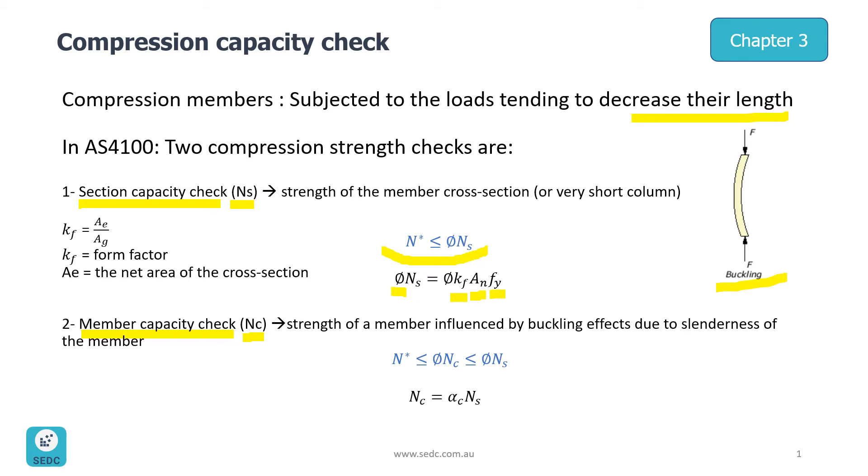The governing formula here is N* ≤ φNC. As you can see, the formula is very similar to section capacity check, but the difference is we have an extra factor of αC, which is a reduction factor looking at buckling effects. This αC is usually less than or equal to one.